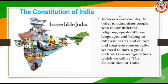India is a vast country. In order to administer — that is, rule — people who follow different religions, speak different languages, and belong to different castes and cultures, and to treat everyone equally, we need a good code of laws and guidelines, which we call the Constitution of India. The Constitution of India is a supreme law which tells us how people are governed, national goals and ideals, rights and duties of the people, and powers and functions of the government.